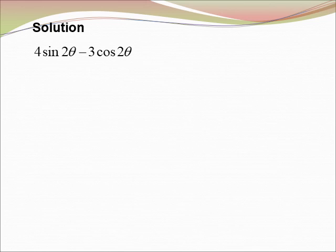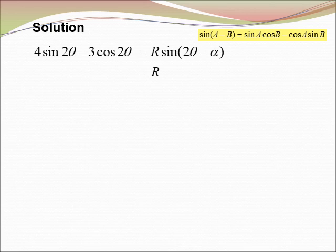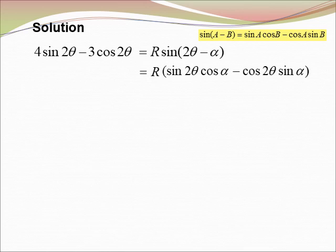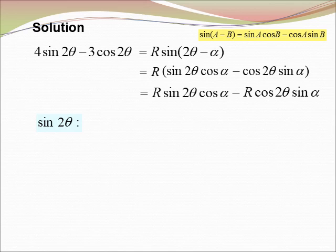Let 4 sin θ − 3 cos θ = R sin(θ − α). We use the formula sin(A − B) = sin A cos B − cos A sin B, with A = θ and B = α, so sin(θ − α) = sin θ cos α − cos θ sin α. Expanding, we get R sin θ cos α − R cos θ sin α.